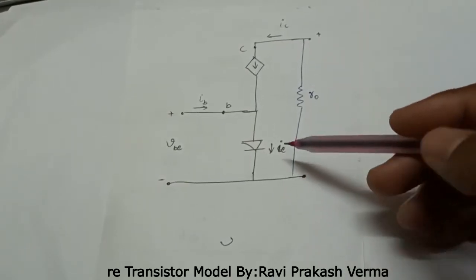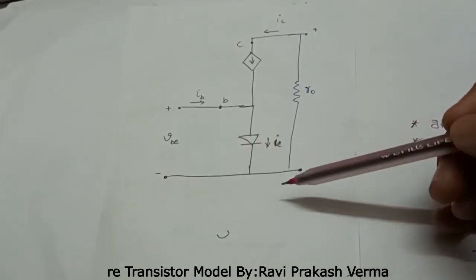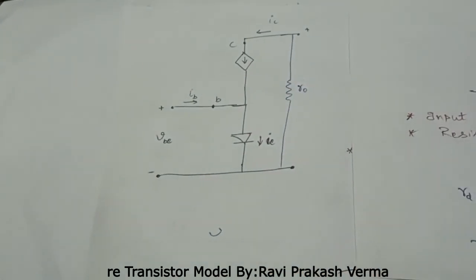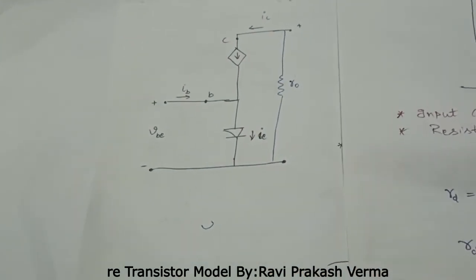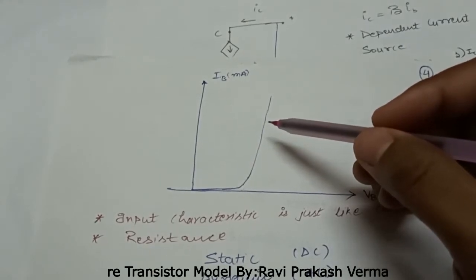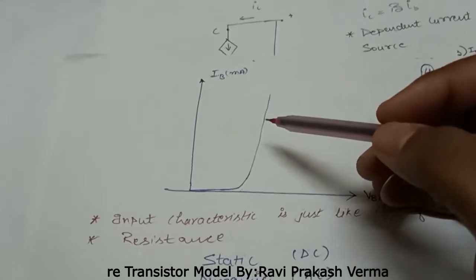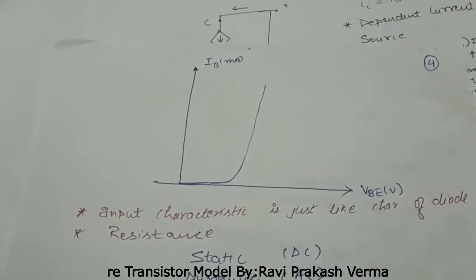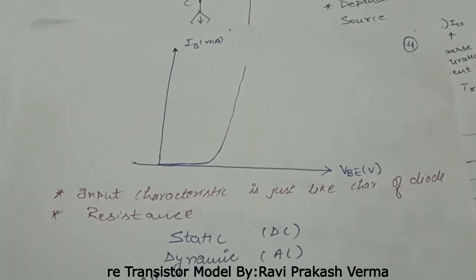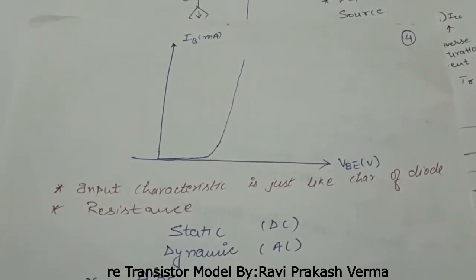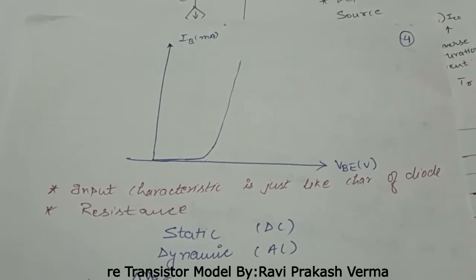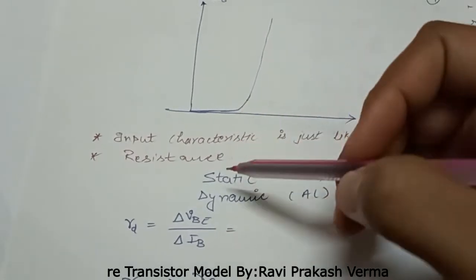The forward-biased diode is shown in the figure. The input characteristic of the common emitter configuration is similar to the diode characteristic. From this diode characteristic, we can calculate two types of resistances: static resistance, used when dealing only with DC signals, and dynamic resistance, used when dealing with AC signals.